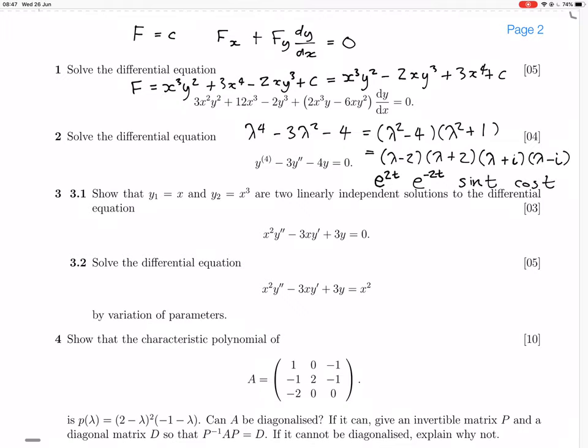Let me just check those. So e to the 2t. Differentiate e to the 2t four times. That means you bring the 2 down four times. So you have like 2 to the 4, which is 16. So you have 16e to the 2t minus 3 times 8, which is 24, minus 4e to the 2t minus 4e to the 2t. Yes, that's zero.